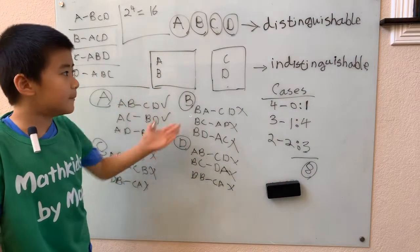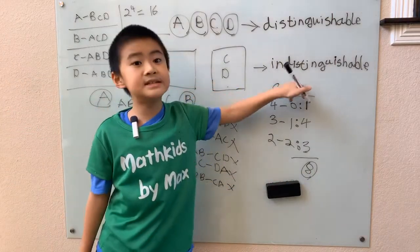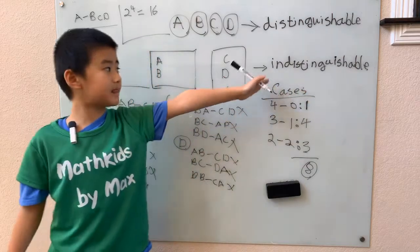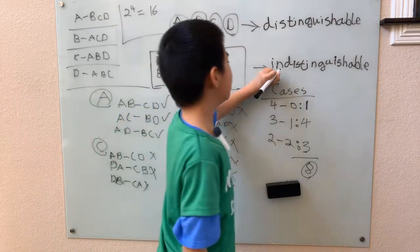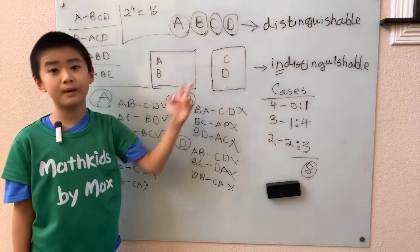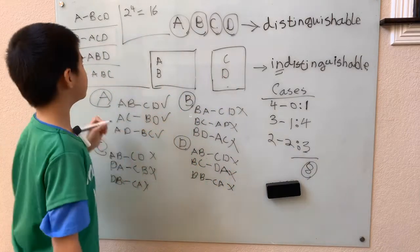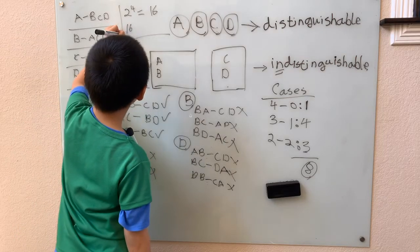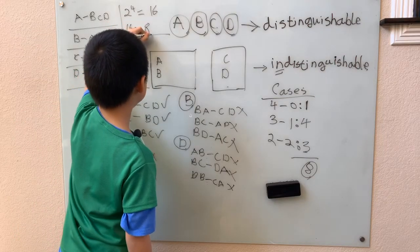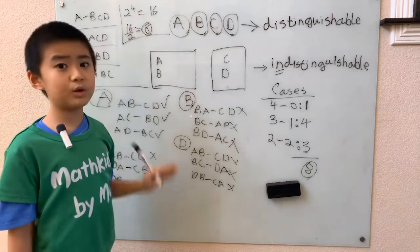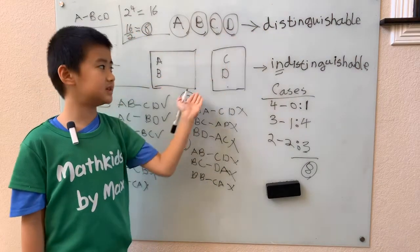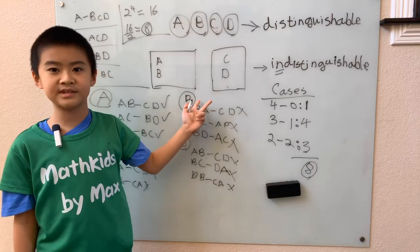But sixteen is not eight. Why? Because that was for distinguishable boxes, and we want indistinguishable boxes. Since there are two boxes, we divide the answer by two: sixteen divided by two is eight ways to divide four distinguishable balls into two indistinguishable boxes.